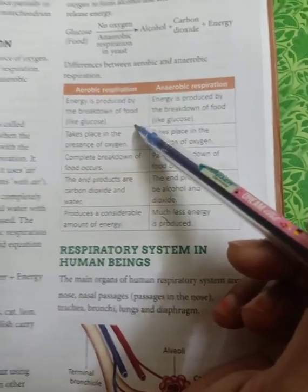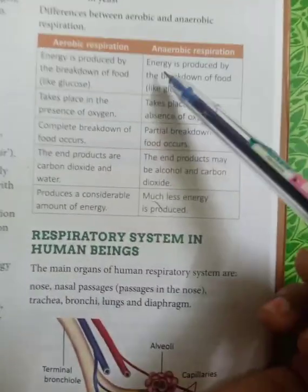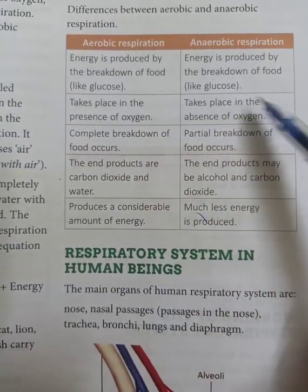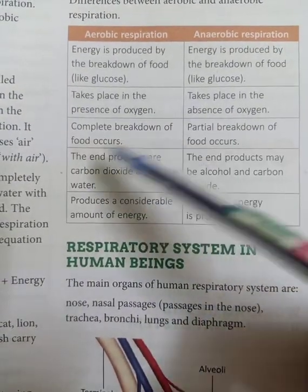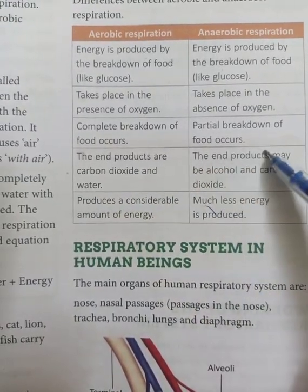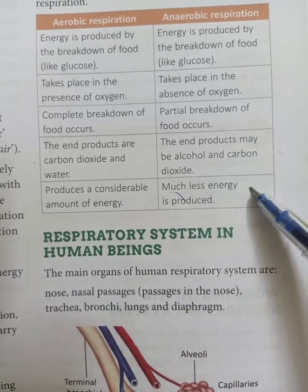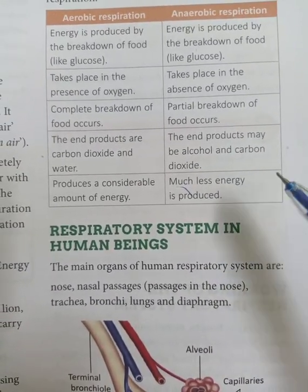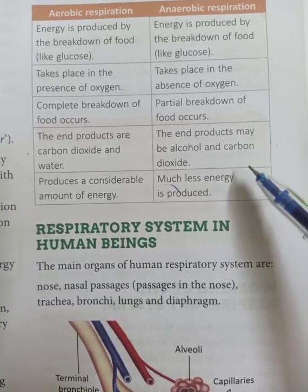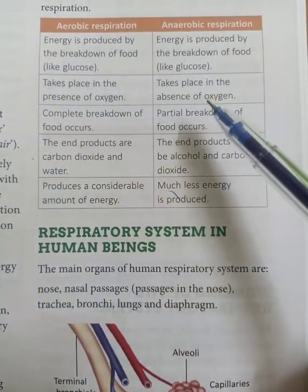The differences between aerobic and anaerobic respiration: both produce energy by breakdown of food like glucose. Aerobic takes place in the presence of oxygen; anaerobic in the absence of oxygen. Aerobic involves complete breakdown of food; anaerobic involves partial breakdown. End product of aerobic is carbon dioxide and water; end product of anaerobic is alcohol and carbon dioxide. Aerobic produces a large amount of energy; anaerobic produces very less energy. Today I have explained what respiration is, the types of respiration, why it is called cellular respiration, and the differences between aerobic and anaerobic respiration.